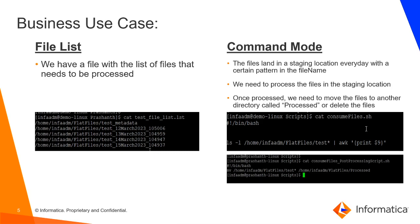Let's review the business use case. When we are using the file list option, most likely there will be an upstream process which generates a file — in this example we have a file called test_file_list.lst. This file, generated by the upstream process, will have the list of all the files which we need to process, as a fully qualified path.